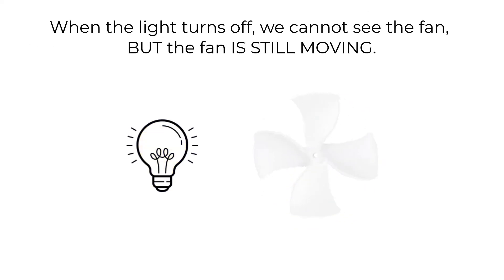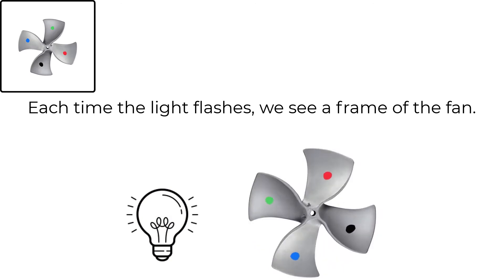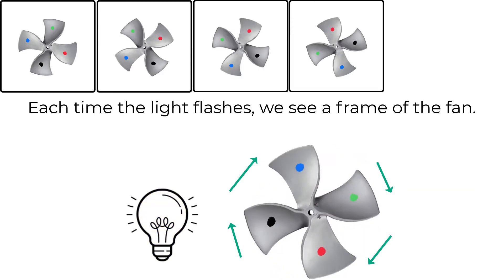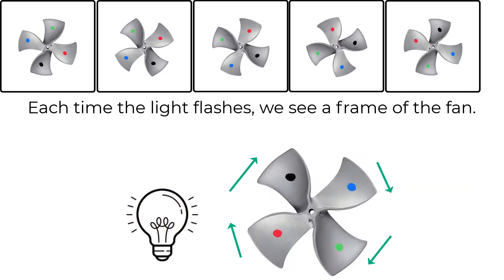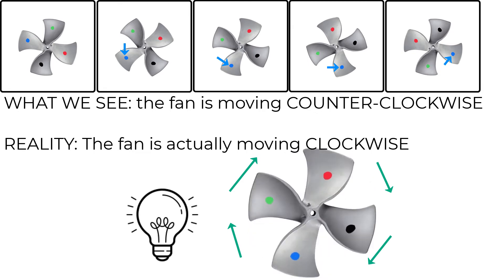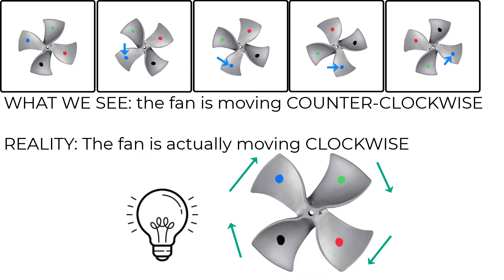When the light turns off, we can't see it, but the fan still spins. Each flash means we see a frame of the fan. You'll notice that even though the fan spins clockwise, the frames that are captured with each flash make it seem as if the fan is spinning counterclockwise.